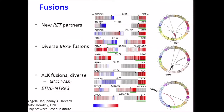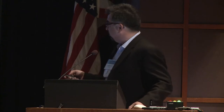Here are our fusions. We have some new RET partners, and we think they're real because they retain and express the kinase domain. We have diverse BRAF fusions. ALK fusions are present in about 1 percent of the cohort — a finding a few groups have now discovered. And ETV6-TRK3 also came up in a screen of radiation-induced papillary carcinomas. We think these new fusions are a big part of our story.